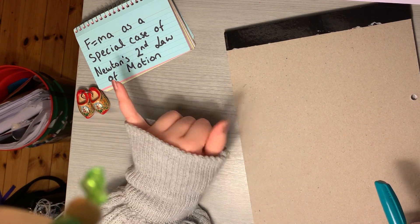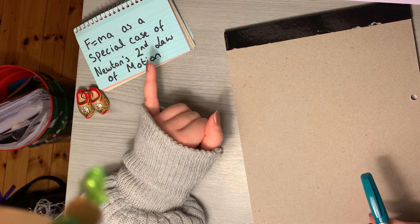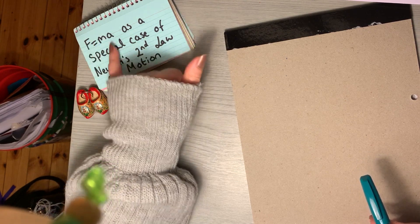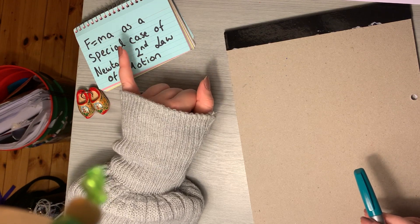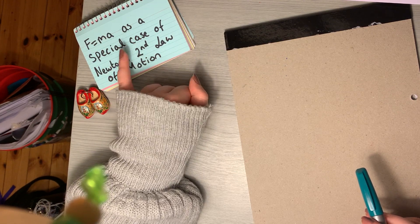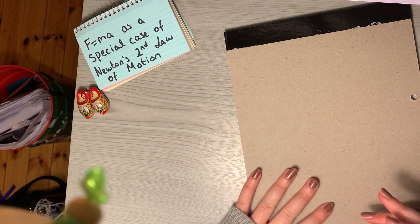So today we're going to have a look at F equals Ma as a special case of Newton's second law of motion. In this formula, F stands for the force applied to an object, M is the mass of that object, and A is the acceleration of that object due to the force applied.